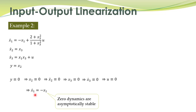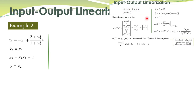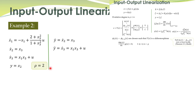Once we have ensured the stability of zero dynamics and therefore internal dynamics, we can perform input-output linearization of this system. The first step is to determine the relative degree. We take the derivative of the output equation: y-dot equals x2-dot equals x3 — no control input appears. Then we take the second derivative: y-double-dot equals x3-dot, and this equation contains the control input. Therefore the relative degree equals 2.